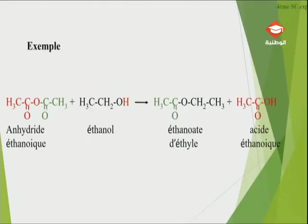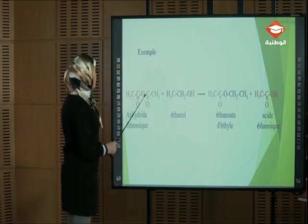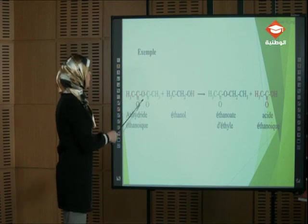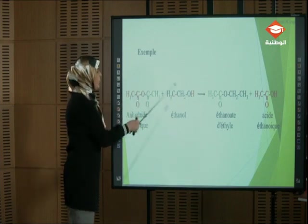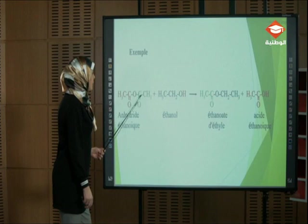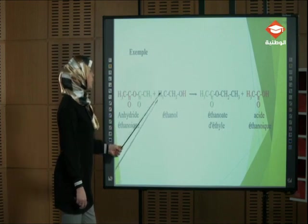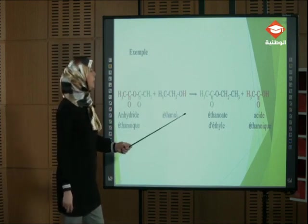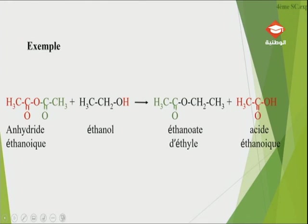Exemple : on prend l'anhydride éthanoïque. Si je coupe la molécule : la partie avec deux oxygènes va prendre l'hydrogène et je forme l'acide éthanoïque. L'autre partie va prendre l'oxygène CH₂CH₃ de l'alcool et je forme l'estère éthanoate d'éthyle. Je reviens à la carte et je passe au quatrième passage.